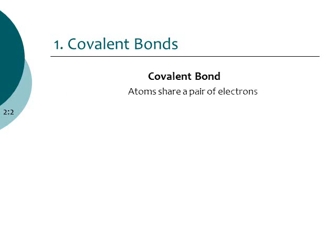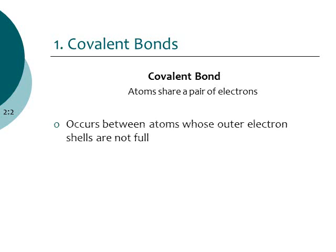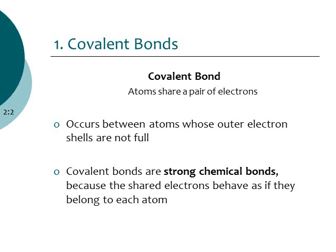Covalent bonds occur when atoms share electrons with each other. Those valence electrons — the outer electrons on your atoms — can be shared with other atoms. Usually covalent bonds form when atoms don't have their outer electron shell full. The first shell can hold up to two electrons, the second shell up to eight. If the second shell only has six electrons, that atom really wants to get two more. Covalent bonds are very strong chemical bonds because electrons behave as though they belong to both atoms at the same time, making covalent bonds very hard to break.